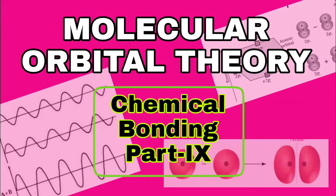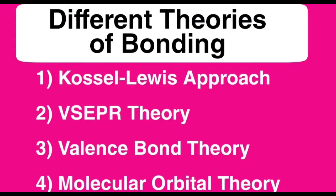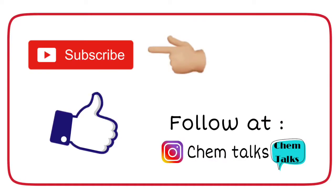Till today, we have discussed about the different approaches which were given to explain how the bonding occurs between the molecules and the compounds. For that, we discussed the Kossel-Lewis approach. We also discussed the VSEPR theory and the valence bond theory. Now, we are going to discuss the molecular orbital theory, which is the last theory in your syllabus. Kindly watch the video and subscribe to my channel, and if you find the video useful, kindly give it a like.